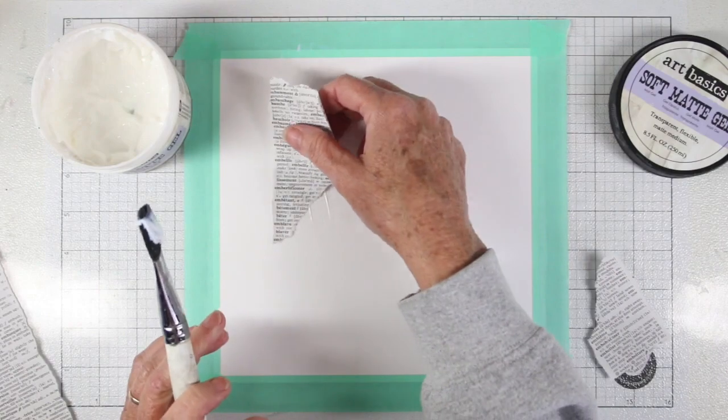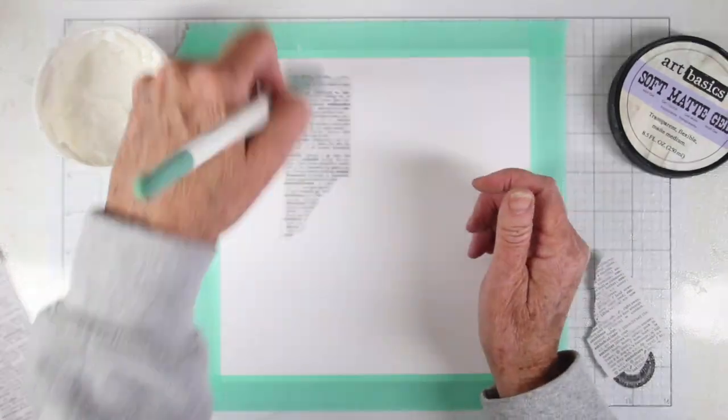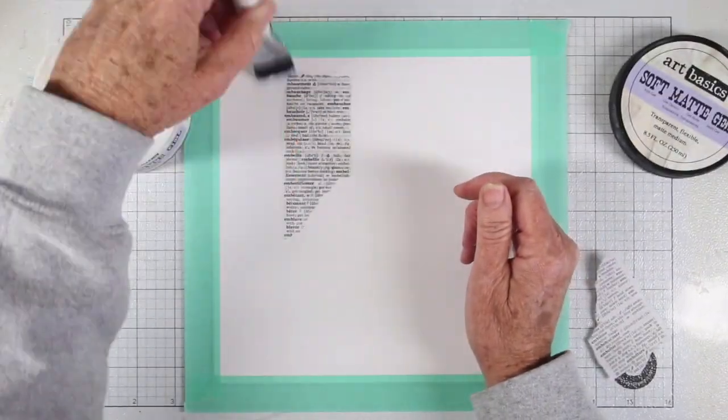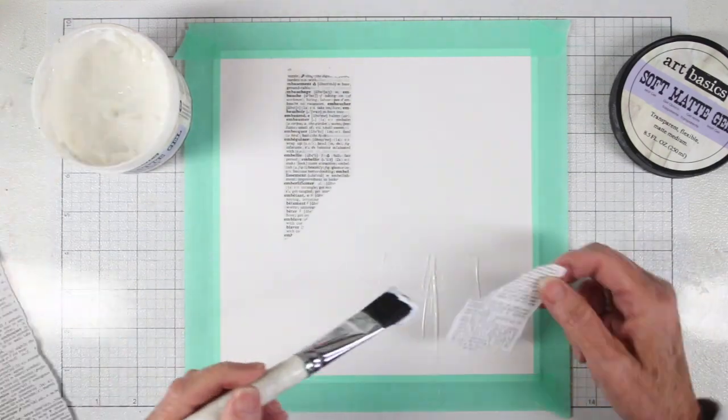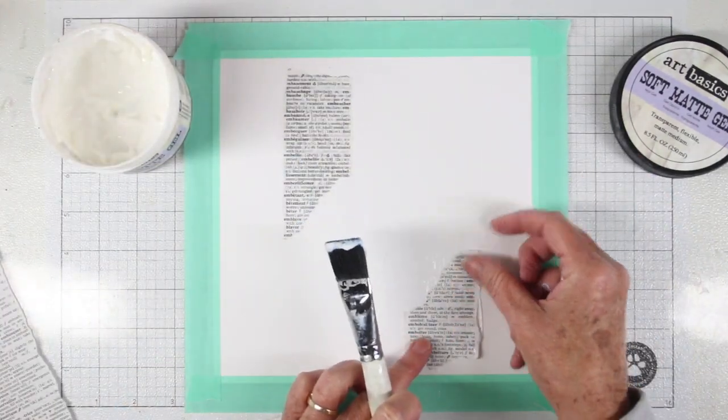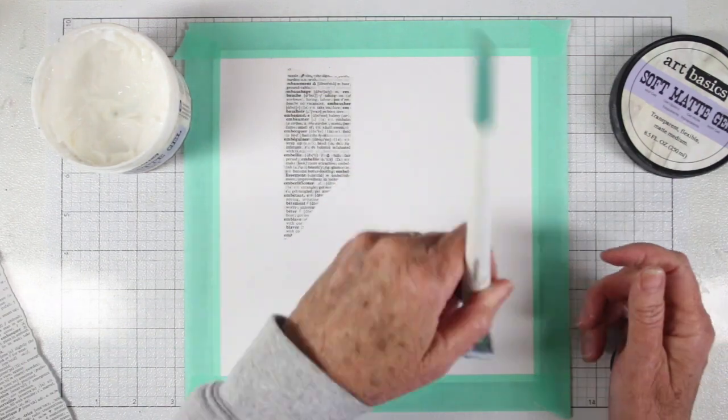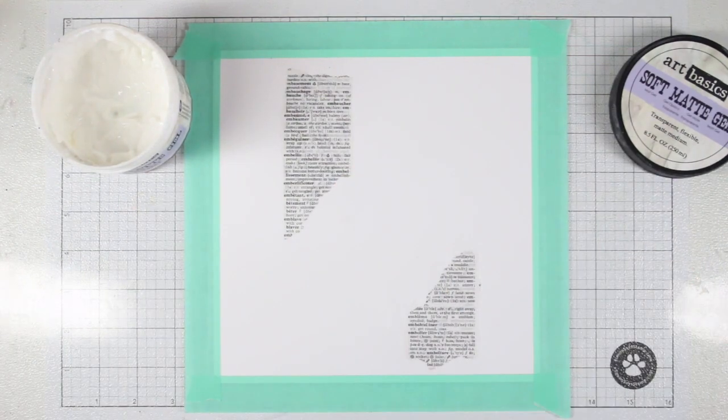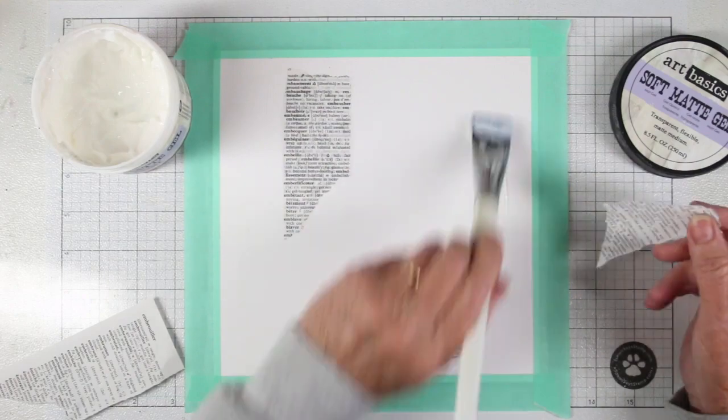I've put some gel medium down—this is soft matte gel from Prima. I put it on the back of the paper, also onto that watercolor cardstock, and then I use my brush and go back over the top. I'll only be putting a few pieces down just to give a few little words here and there that we'll be able to see later through the collage.